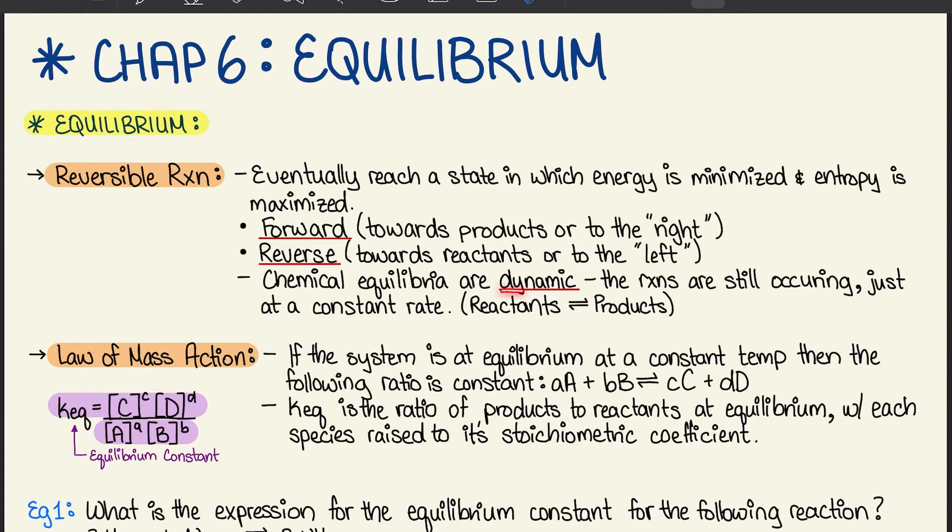Chemical equilibria are dynamic, and that means that the reactions are still occurring just at a constant rate. So the forward reaction equals the reverse reaction, and they're kind of in that middle state.